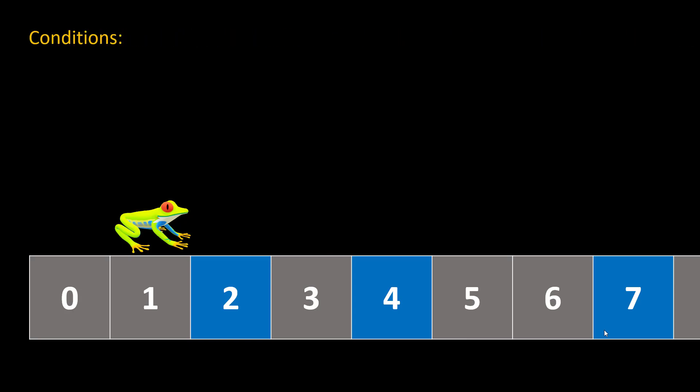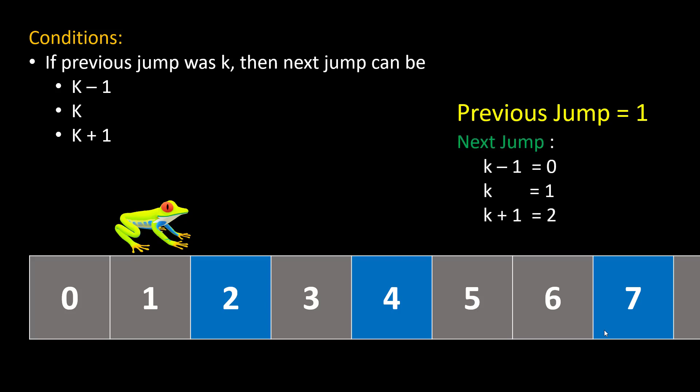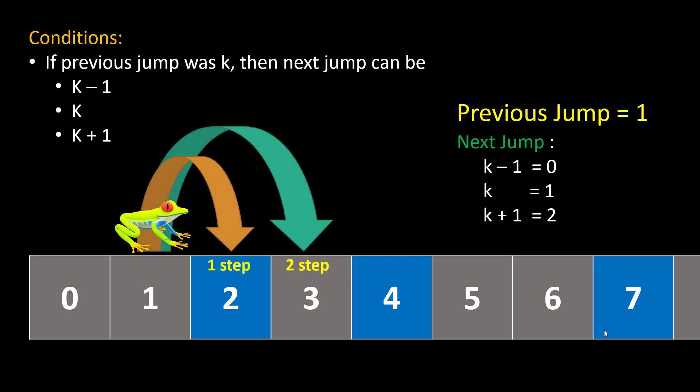There are certain conditions attached to the number of jumps a frog can make from a particular index. The condition states that if the previous jump was of k units, then the next jump must be either k-1, k, or k+1 units. When we jumped from 0 to 1, we jumped 1 unit, so that becomes the previous jump. Now in order to find out how many jumps we can make from index 1, we have only 3 options: the next jump can either be 0, 1, or 2 units. Jumping 0 units doesn't make sense, so we will see what jumping 1 unit and 2 units means. If we jump only one step, then we will land on water, so we won't take that.